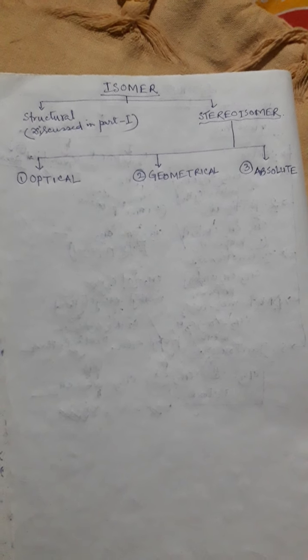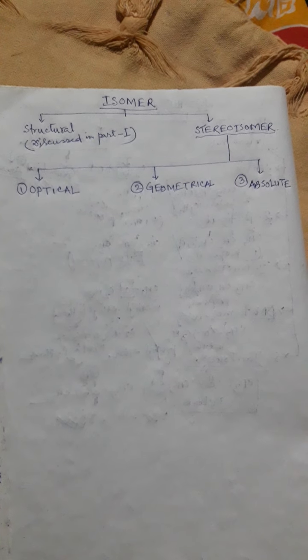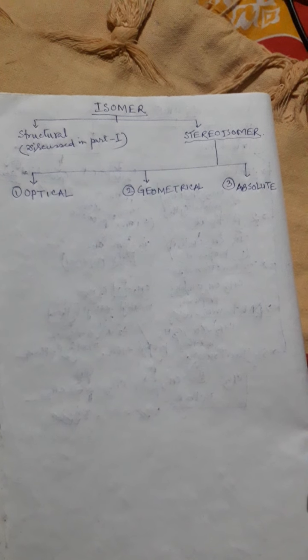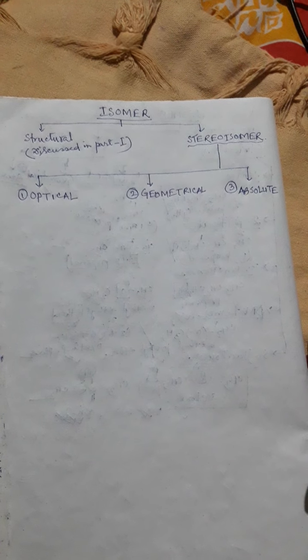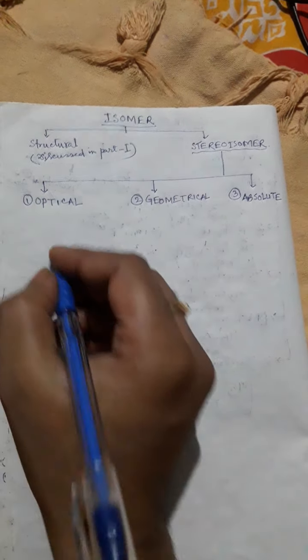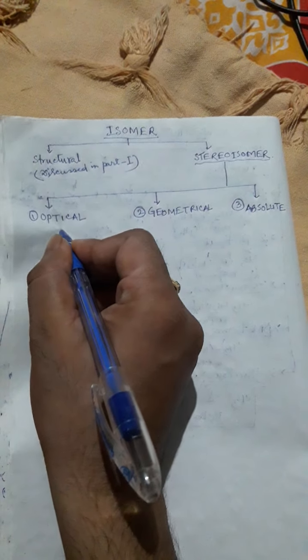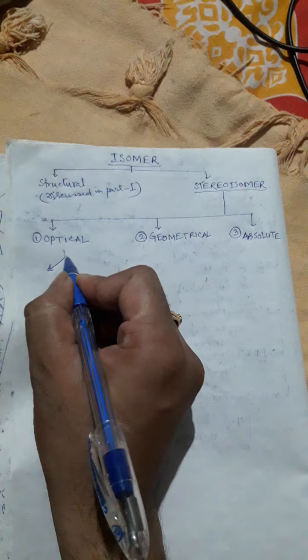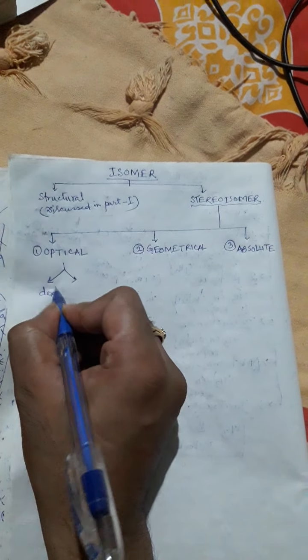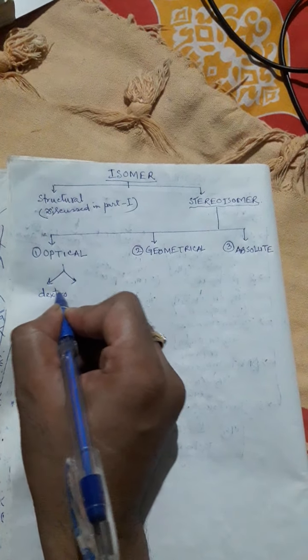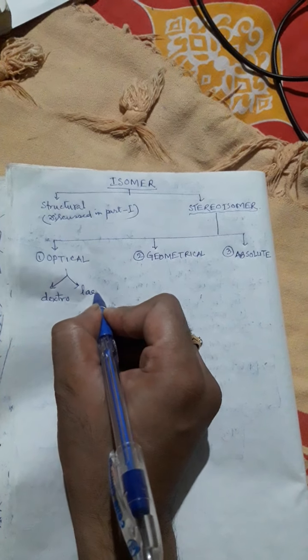Welcome friends, let's start the second part of isomerism, that is stereoisomers. Stereoisomers are three types: optical, geometrical, and absolute. In optical isomerism, it can again be classified into two categories: dextro and levo.